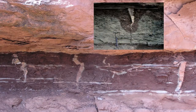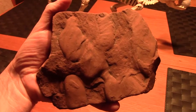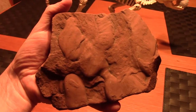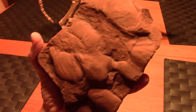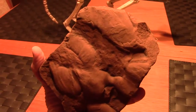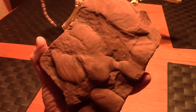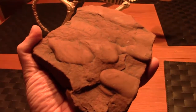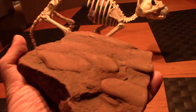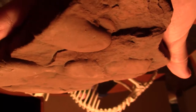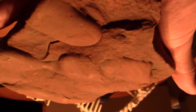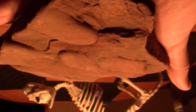Soft mud can also bulge downward as other material, usually sand, loads on top of the soft water-rich clay. The result is something we call load sagging in the mud, which results in load casts bulging out of the depressing bottom of the overlying bed, and thus can also be used as an up indicator.